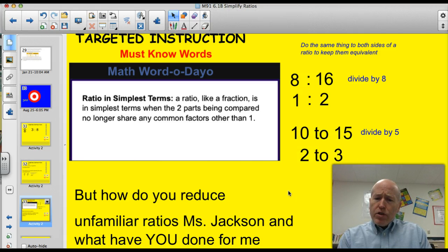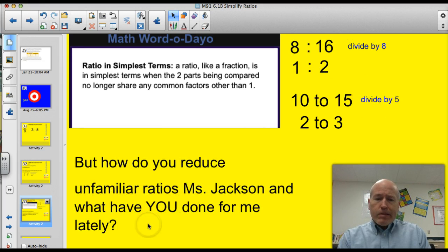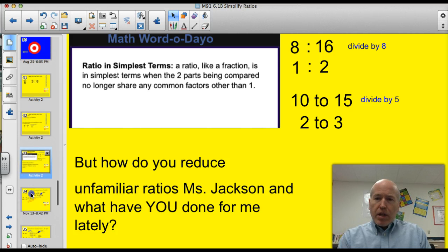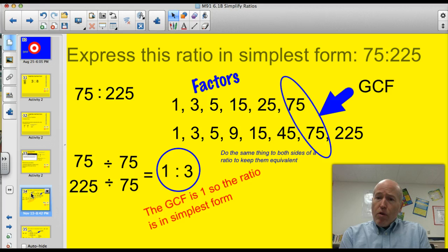But how do you reduce unfamiliar ratios, Ms. Jackson? And what have you done for me lately? What the heck am I talking about? It'll come together at the end. Let's take a look at expressing this ratio in simplest form. So 75 to 225. Well, one way to do it is to actually figure out what all the factors they have in common, and then choose the largest one. So what I did here is I just did a couple of the quick factors for 75, and then I did the factors for 225, and then I looked for the greatest common factor, that GCF. Well, that's 75, so if I take 75 and divide it by 75, I'm going to get 1. If I take 225 and I divide it by 75, I'm going to get 3. So I did the same things to both sides of the ratio. And this is in simplest form because the greatest common factor is 1.